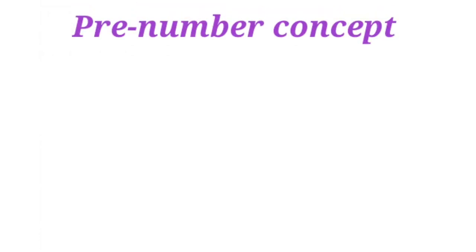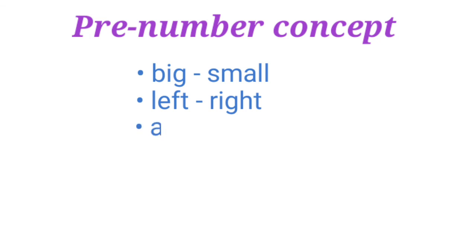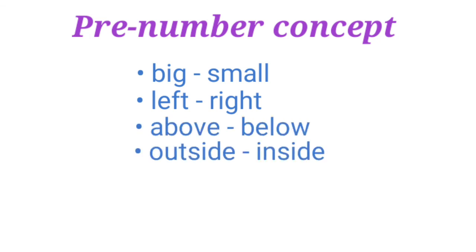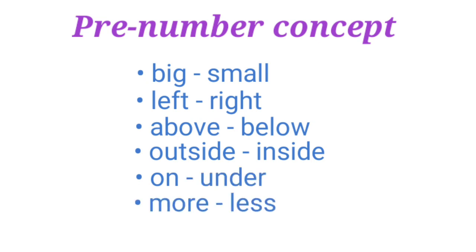So children, the pre-number concepts that we have revised today are: big and small, left and right, above and below, outside and inside, on and under, more and less, and top and bottom. I believe everyone is now clear with the pre-number concepts. That's all for today — thank you and have a nice day, children!